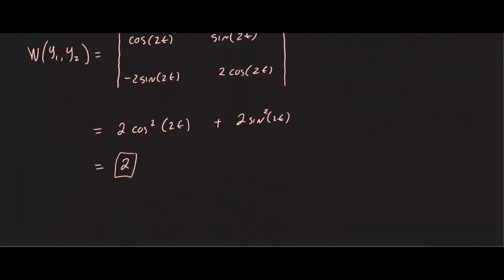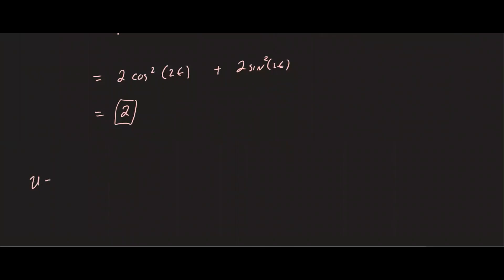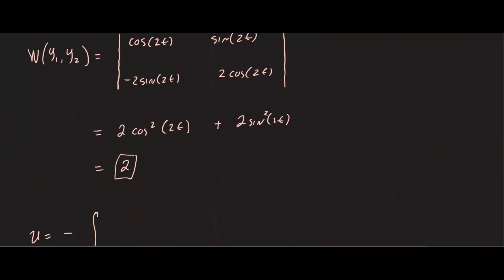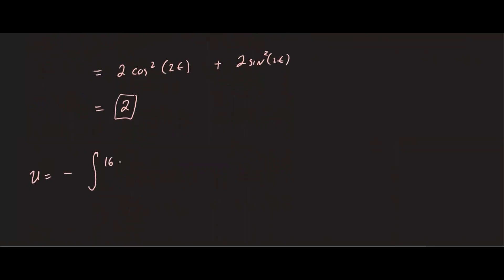So u is going to be the negative integral of g. g in this case is 16 secant squared 2t. 16 secant squared of 2t times y2, remember y2 was sine of 2t, all over a times Wronskian. a is 1, Wronskian is 2 dt. Now we just need to integrate this using any technique that's applicable.